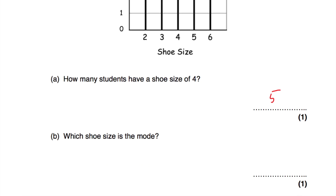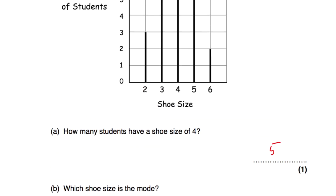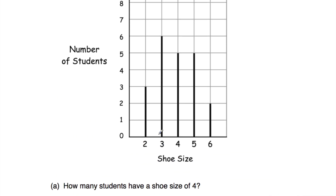Part B says which shoe size is the mode? The mode is the most common, so that's the one with the highest vertical line. Six students have a shoe size of three, so the mode is three. If you were to write down a list of all the shoe sizes — three twos, six threes, five fours, five fives, and two sixes — three would be the number that appears the most. So the mode is three.